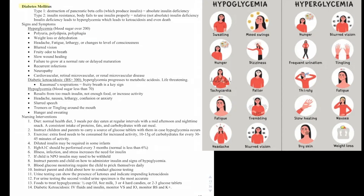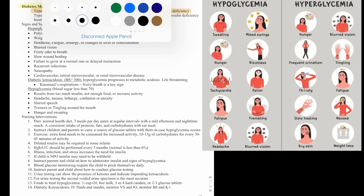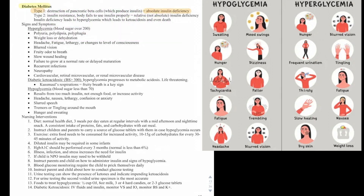Next we have diabetes. There are two types. Type 1 is what people are born with — it involves destruction of pancreatic beta cells, which produce insulin, resulting in an absolute insulin deficiency, meaning there is no insulin. Type 2 is an insulin resistance where the body fails to use insulin properly. There is a relative but not absolute insulin deficiency, so levels are lower but not completely gone.